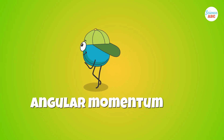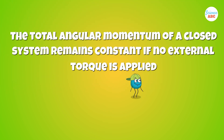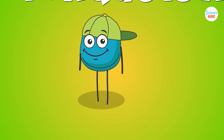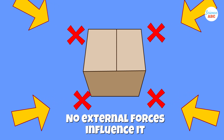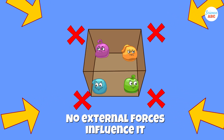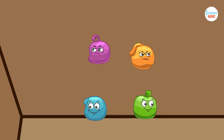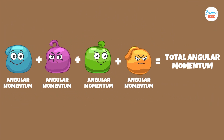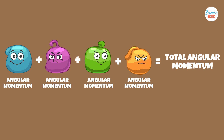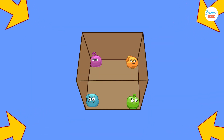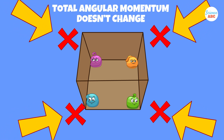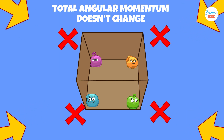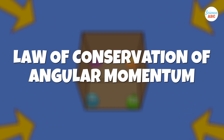Here's another important insight about angular momentum. The total angular momentum of a closed system remains constant if no external torque is applied. We call a system closed when no external forces influence it in any way. In a closed system consisting of one or multiple objects, the total angular momentum is equal to the sum of the angular momenta of all individual objects within that system. If no external forces act on it, then the total angular momentum doesn't change — it retains its value unless something external affects it. This is known as the law of conservation of angular momentum.